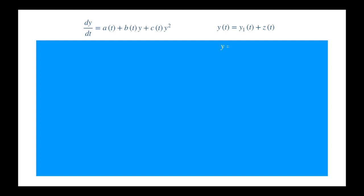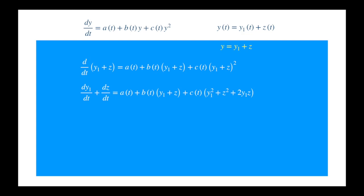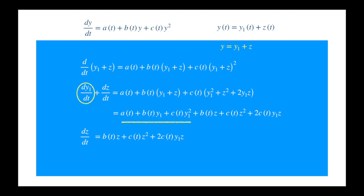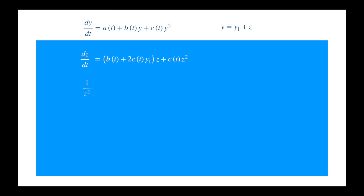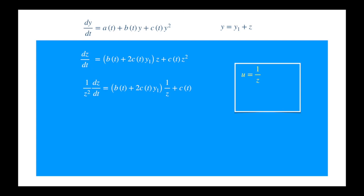We can get rid of the brackets and rearrange the terms. Since y1 is assumed to be a solution of the Riccati equation, the first three terms must equal the derivative of y1, so these terms vanish. We can combine the terms containing z. Now this is the Bernoulli equation, which is very easy to solve. Divide through by z squared. Now set 1 divided by z equal to u. And then the derivative of u is easy to calculate via power and chain rules. By the way, this transformation we use is a general method for solving this kind of equation. It relies on the observation that the derivative of z to the power minus n gives z to the power minus n minus 1, times the derivative of z.